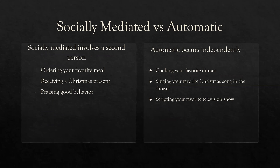Socially mediated versus automatic. When we think about socially mediated, these are consequences — in this case, reinforcers — that involve a second person. It takes a social being to deliver the reinforcer. Ordering your favorite meal, receiving a Christmas present, praising good behavior — these are all socially mediated. Automatic reinforcement occurs independently, independent of social mediation. There's nobody else. Think alone. Cooking your favorite dinner, singing your favorite Christmas song in the shower, scripting your favorite television show — nobody's delivering reinforcement for that. It's automatic, it occurs independent of social mediation.